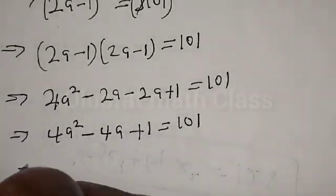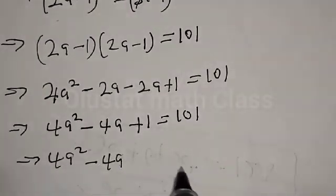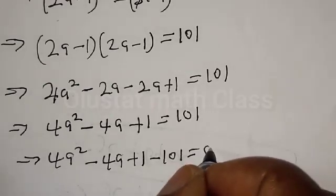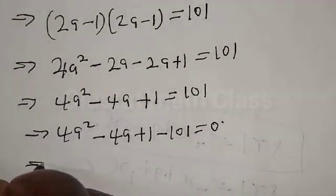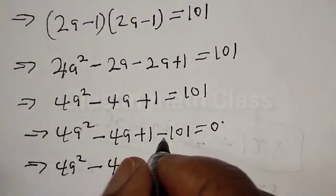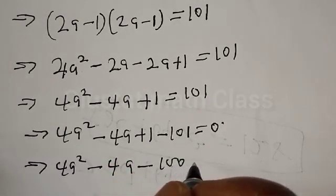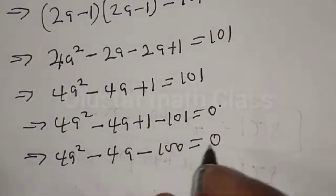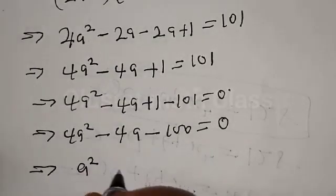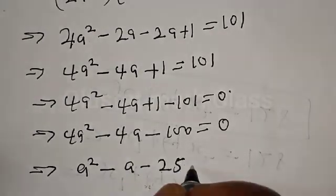Then, this implies that 4a squared minus 4a plus 1, if we move 101 to the other side, gives 4a squared minus 4a minus 100 equal to 0. Now let's divide all terms by 4. This implies that we have a squared minus a minus 25 equal to 0.